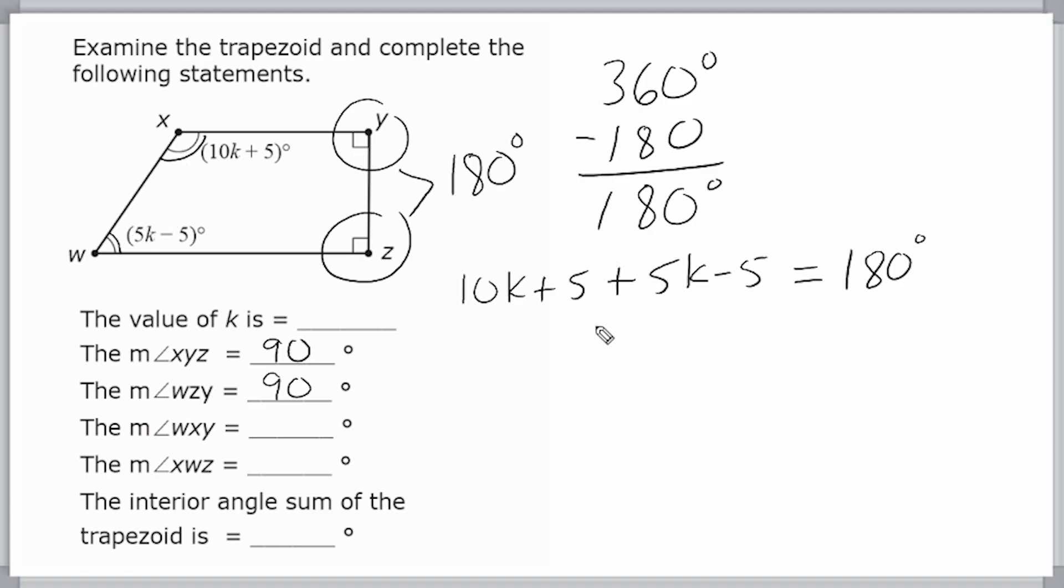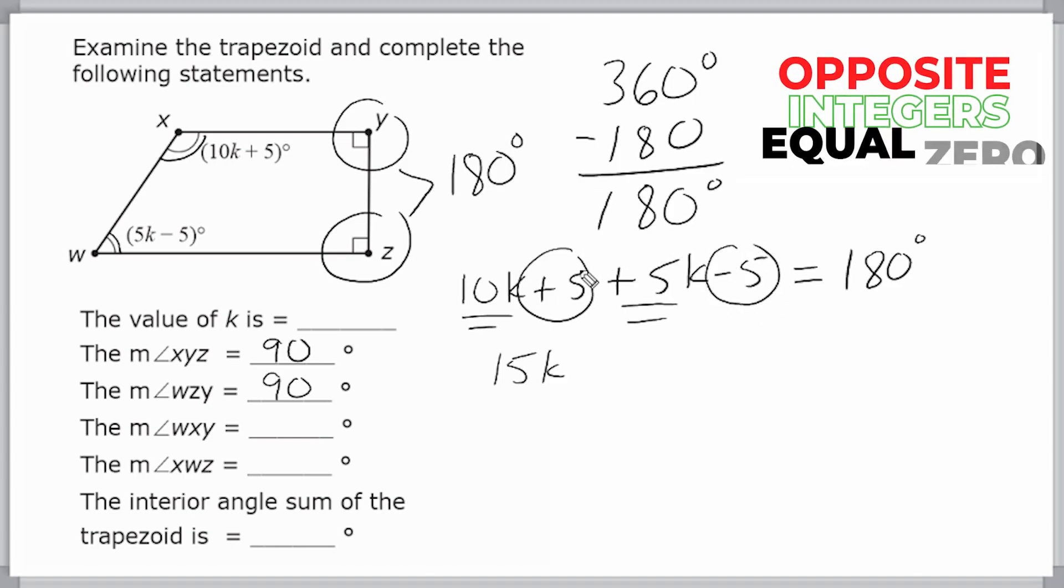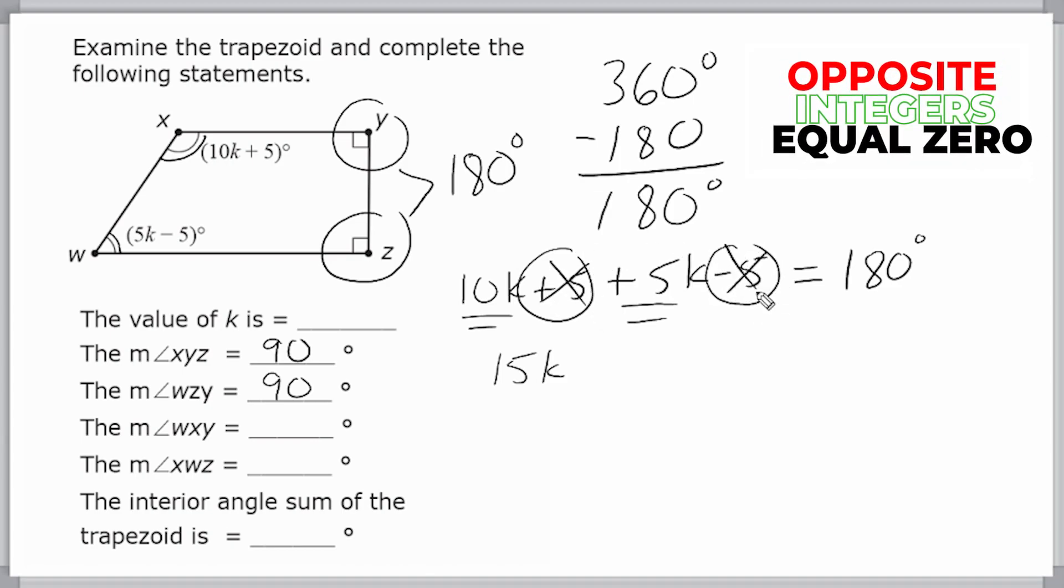Alright, so let us go ahead and simplify this expression a bit. We have 10k plus 5k, which is 15k. We have positive 5 and negative 5, which are opposite integers. So when you combine those, that's 0, so we don't have any constants left. So we just take 15k and set that equal to 180 degrees.